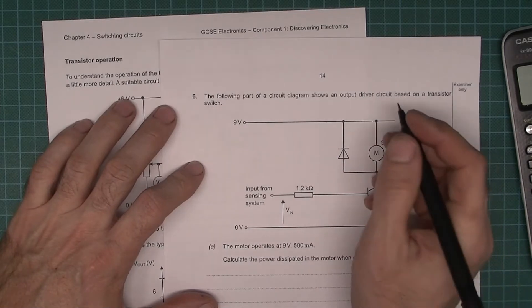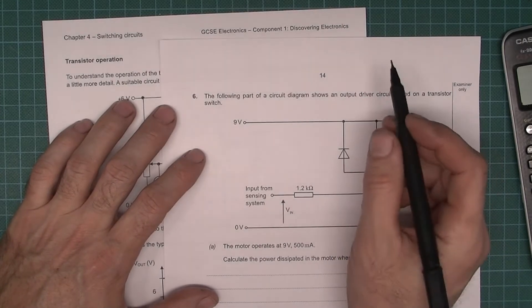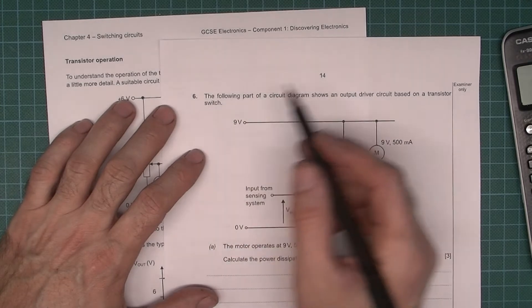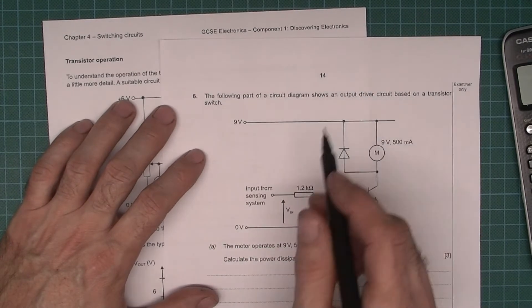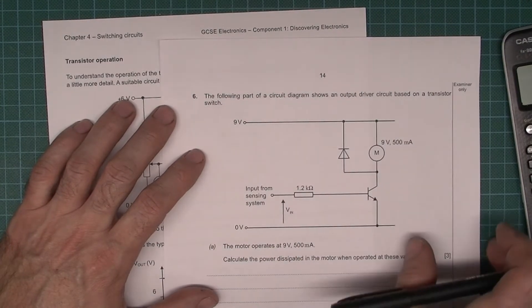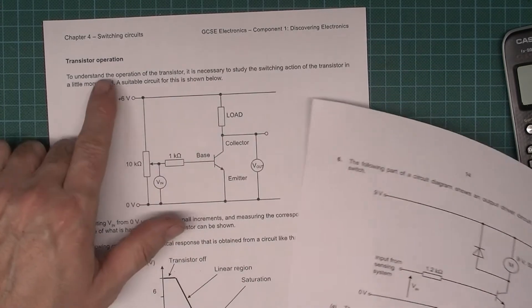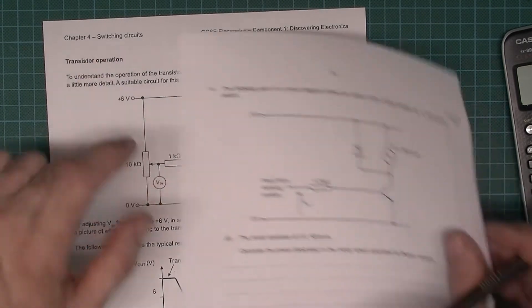Hi, I'm recording this video for my GCSE electronics students preparing for the mock exam. We're going to have a look at question 6 from the 2019 Component 1 paper. If you still have any questions about answering this, do have a look at chapter 4 switching circuits.